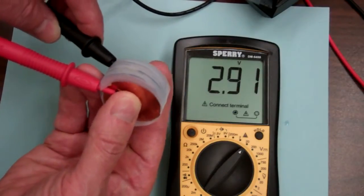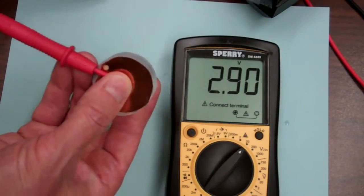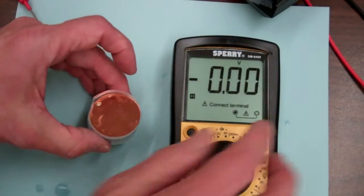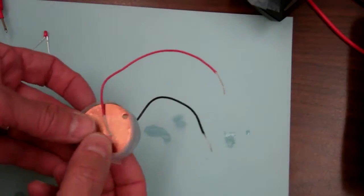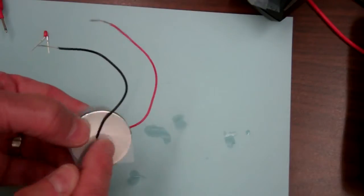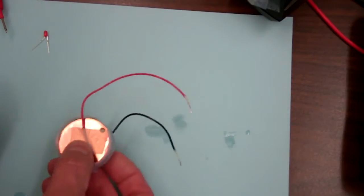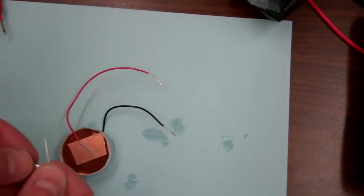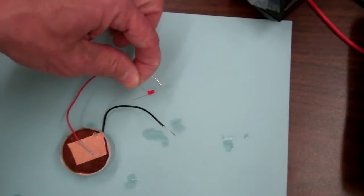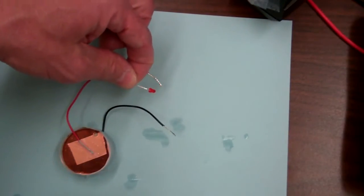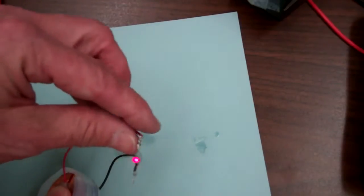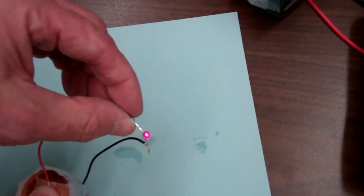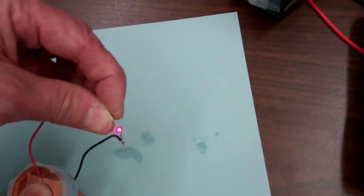So now I'm going to take this and attach it to a light emitting diode. So I've scotch taped two leads to the battery. And now I'm going to connect that to a red light emitting diode. And you can see the light emitting diode glowing.